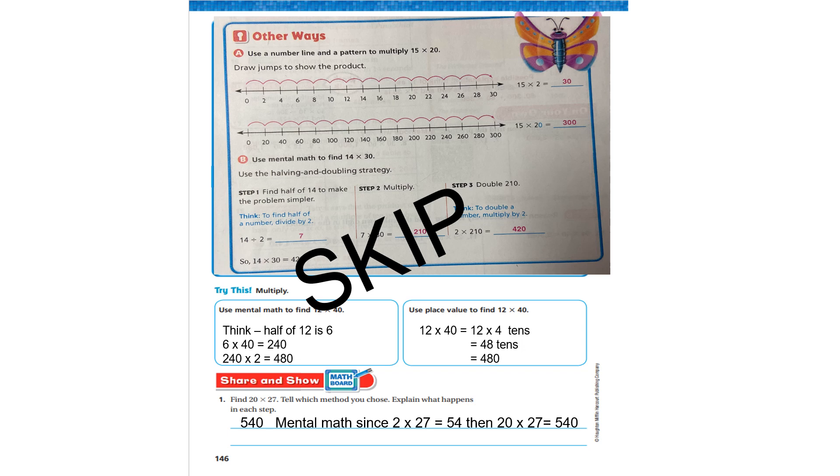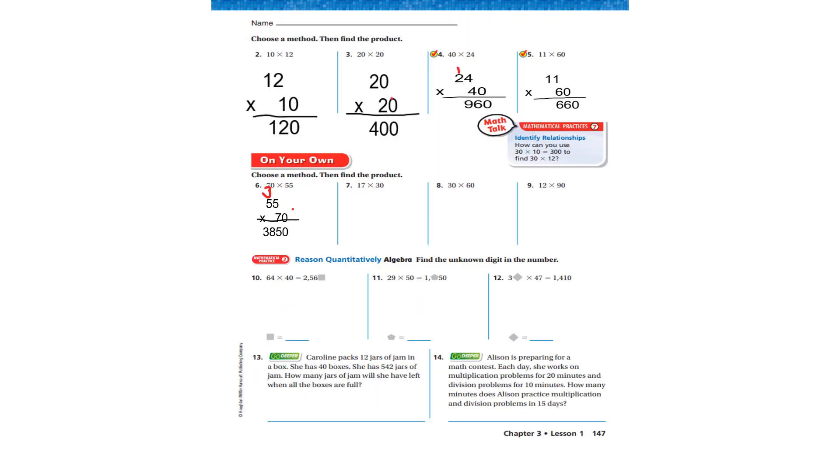We're going to skip page 146 because, quite honestly, you're never going to multiply by tens using a number line. So go right to page 147. Now let's get to the easy way of multiplying by ten.